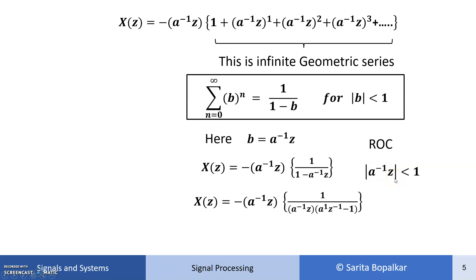Now let's simplify. We take a raised to minus 1 times Z common from the denominator. After taking it common, the denominator becomes a raised to 1 times Z raised to minus 1 minus 1. We can cancel terms, giving us the simplified expression for X of Z.